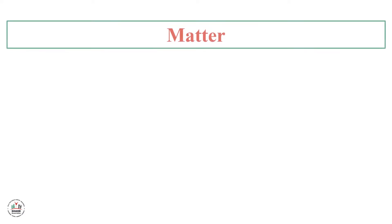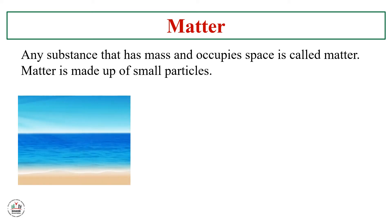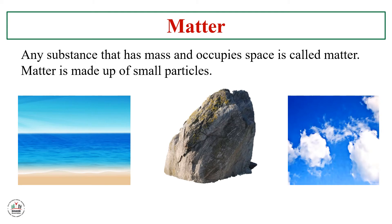First, what's the meaning of matter? Any substance that has mass and occupies space is called matter. Matter is made up of small particles. So matter is anything around us that has mass and occupies space, and it's composed of very small particles. We have water, rock, and air - these are all matter.